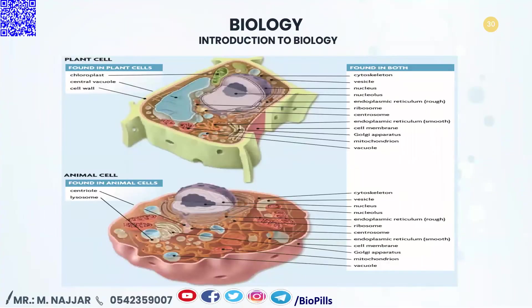If I make a differentiation between the plant and animal cell: all of them have the same organelles, except the plant cell additionally has chloroplast, central vacuole, and cell wall, and it lacks the centriole and lysosome. The animal cell has centrioles and lysosome, but it lacks the cell wall and central vacuole. Those are the major differences between plant and animal cell; the rest of the organelles are the same.